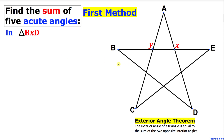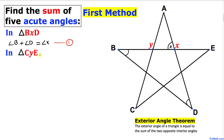Here's our very first step. Let's focus on triangle BXD. As you can see, angle B and angle D are interior angles, and their sum is going to be equal to this exterior angle X. Therefore I can write: angle B plus angle D equals angle X. Let me call this equation number one.